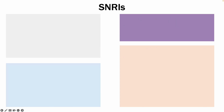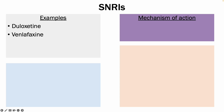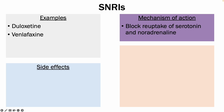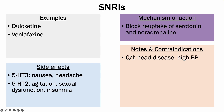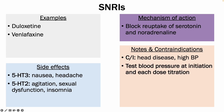SNRIs are serotonin-noradrenaline reuptake inhibitors. Examples include duloxetine and venlafaxine. The mechanism of action is similar to tricyclics — they block the reuptake of serotonin and noradrenaline. The side effect profile is quite similar to SSRIs. However, some of the contraindications include heart disease, especially cardiovascular disease, such as previous vascular strokes or vascular disease, as well as high blood pressure. Before starting a patient on an SNRI, you should test the blood pressure and also at every dose titration, as they can increase blood pressure.